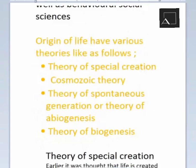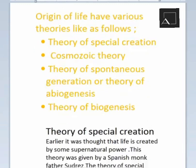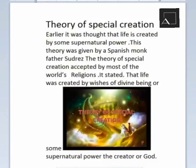The origin of life has various theories: the theory of special creation, the cosmozoic theory, the theory of spontaneous generation (also called abiogenesis), and the theory of biogenesis. The theory of special creation was given by a Spanish monk, Father Suárez, and is accepted by most of the world's religions.